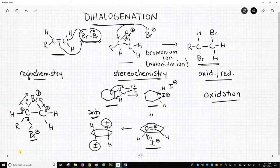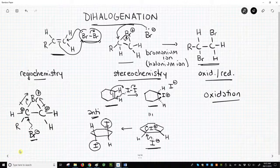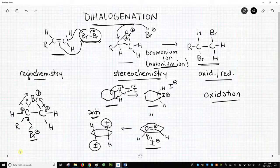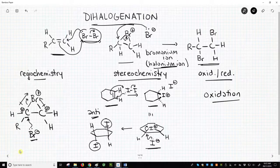That is the dihalogenation. It's an addition with Cl2, Br2, or I2 onto an alkene. It's characterized by a strained halonium ion intermediate, which is opened at the more substituted carbon. The addition is anti-addition and an oxidation.